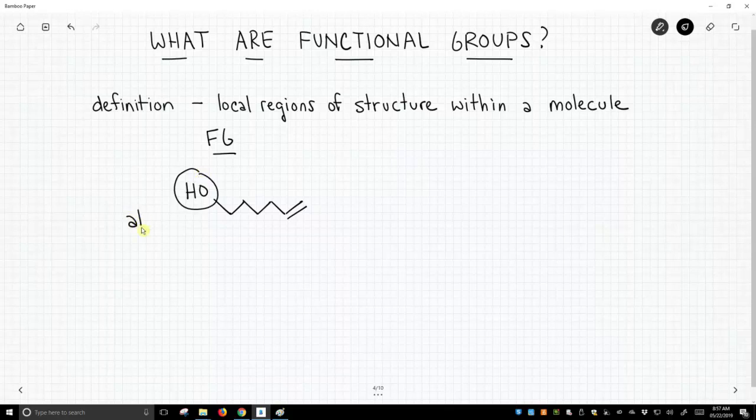One is this one here that's an alcohol, and we'll learn how to identify these later. And over here is this carbon-carbon double bond, and people would call this an alkene.